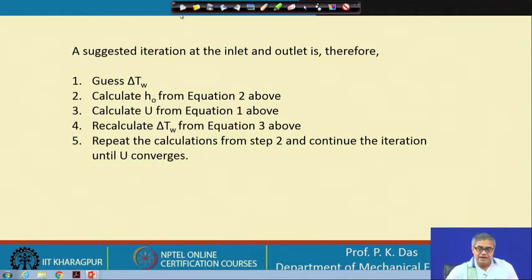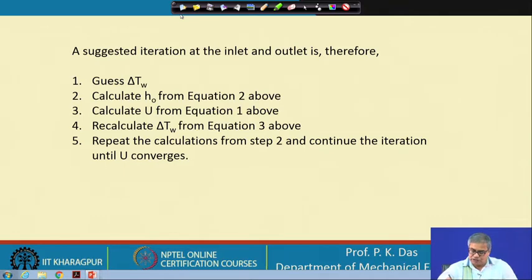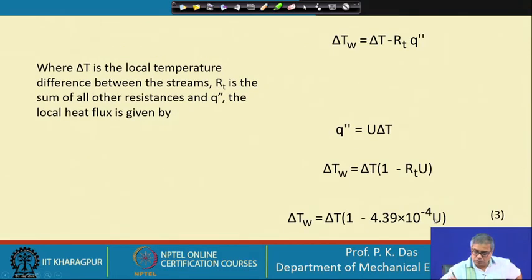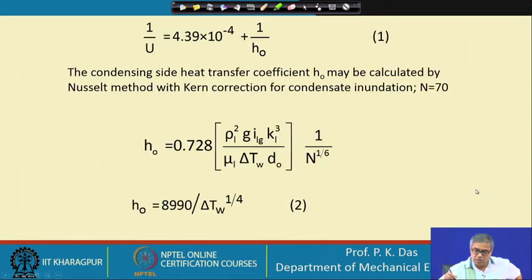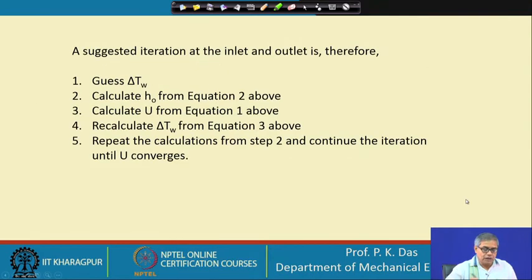The suggested iteration steps at the inlet and outlet are therefore: Step 1 — guess delta T_w. Step 2 — calculate H_o from equation 2. Step 3 — calculate U from equation 1. Step 4 — recalculate delta T_w from equation 3. Repeat from step 2 and continue the iteration until U converges.